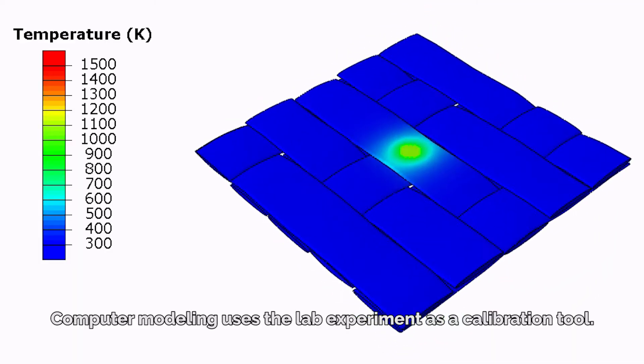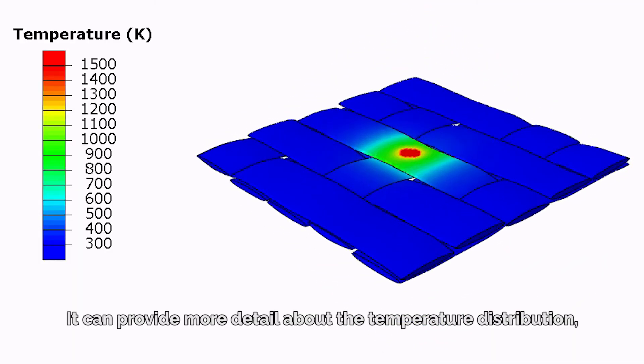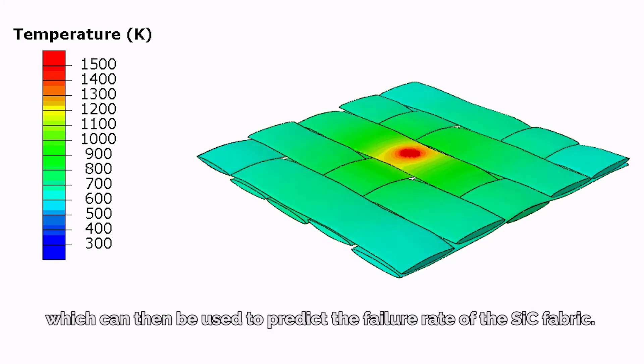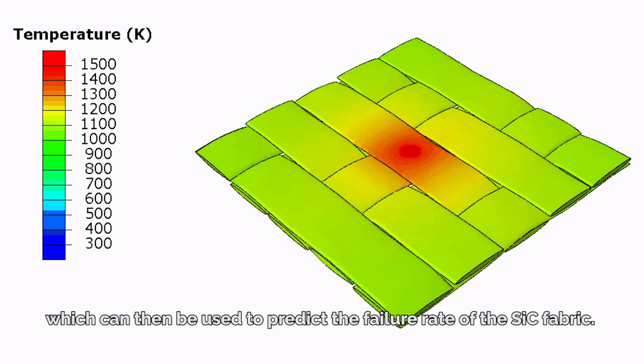Computer modeling uses the lab experiment as a calibration tool. It can provide more detail about the temperature distribution, which can then be used to predict the failure rate of the silicon carbide fabric.